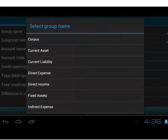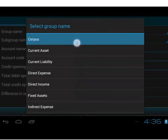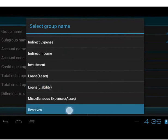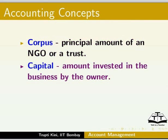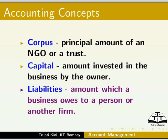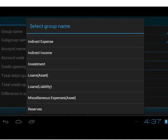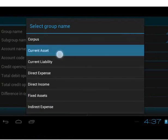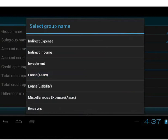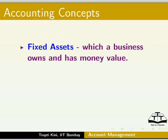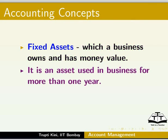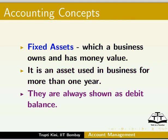Accounts with credit opening balance fall under groups: corpus, current liability, loans liability, and reserves. Corpus is the principal amount of an NGO or a trust. Capital is the amount invested in the business by the owner. Liabilities denote the amount which a business owes to another firm or person. Accounts with debit opening balance fall under groups: current asset, fixed assets, loans asset, investment, and miscellaneous expenses asset. Fixed assets represent everything which a business owns that has a money value and is used for more than one year. They are always shown as debit balance.